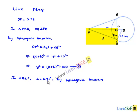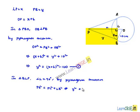Again, in triangle BLP, angle L equals 90 degrees. By Pythagoras theorem, the hypotenuse PB² equals PL² plus LB², which gives y² equals x² plus 8², that is y² equals x² plus 64. Let this be equation number two. Since the left-hand sides of equations one and two are equal, the right-hand sides must also be equal.